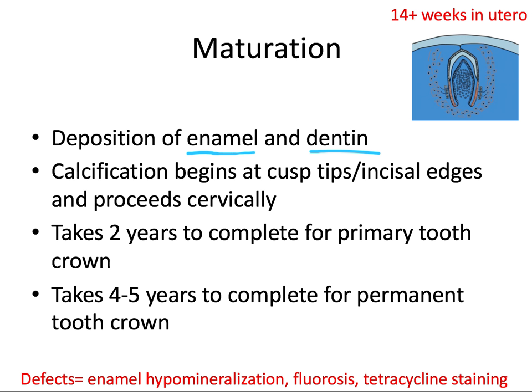Disturbances like localized infection and trauma can result in hypocalcification or hypomineralization — those are the white spots. You can get fluorosis if you have excessive systemic fluoride ingestion; fluoride ingestion greater than 1 ppm can affect ameloblasts, causing a defective enamel matrix and a mottled enamel appearance. This affects children from their second trimester, week 14 in utero, through eight years old — or 16 years if you count the wisdom teeth. Adults are not affected.